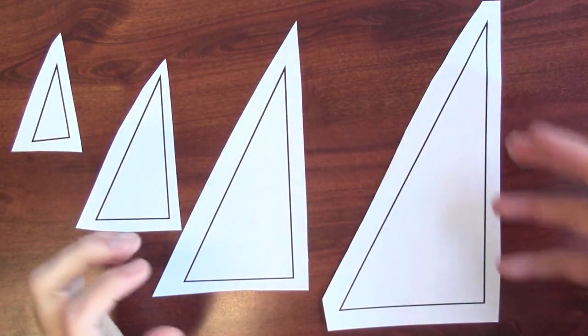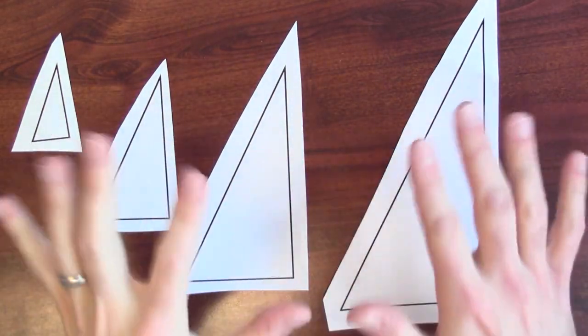So the side lengths are all different, but the ratios between the corresponding sides are the same.